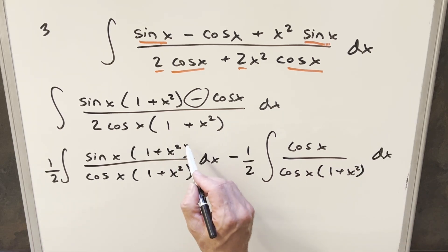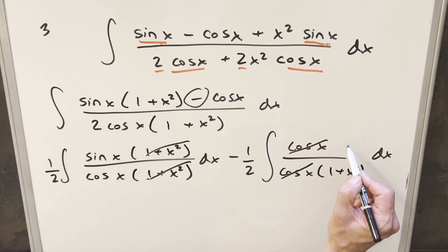But then we get a bunch of cancellation. 1 plus x squareds cancel here. Cosines cancel here, just leaving a 1 in the numerator. But now we have two easy integrals.